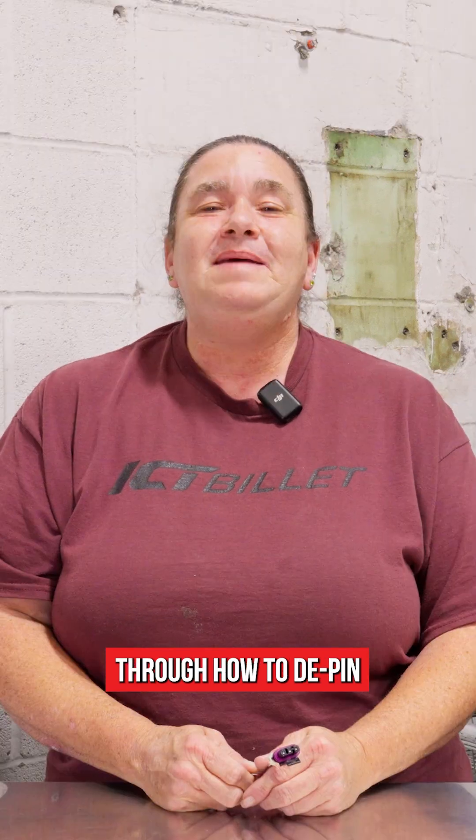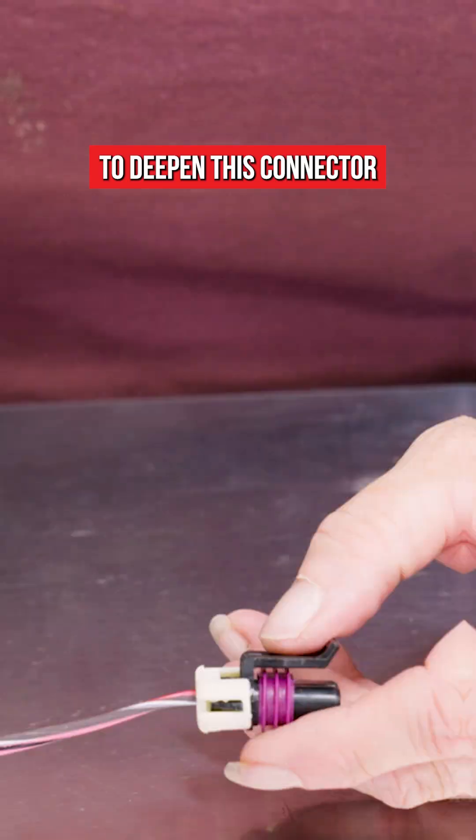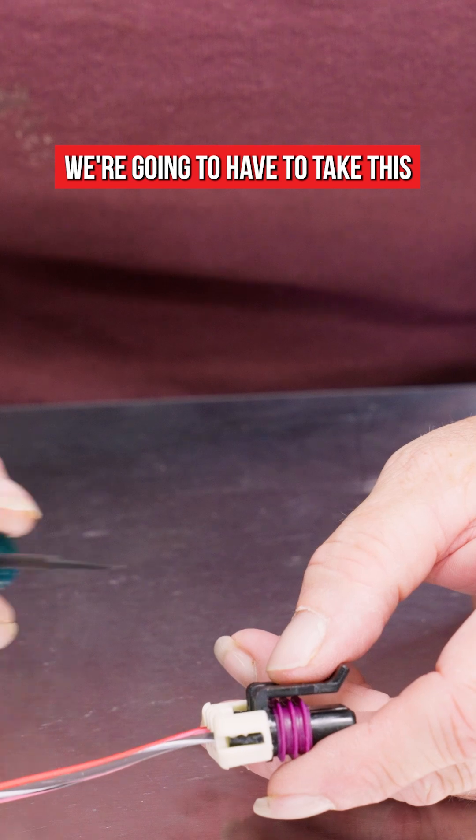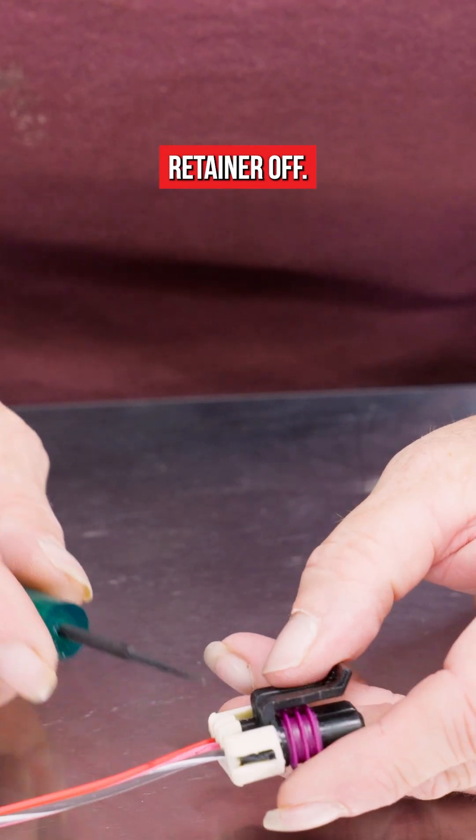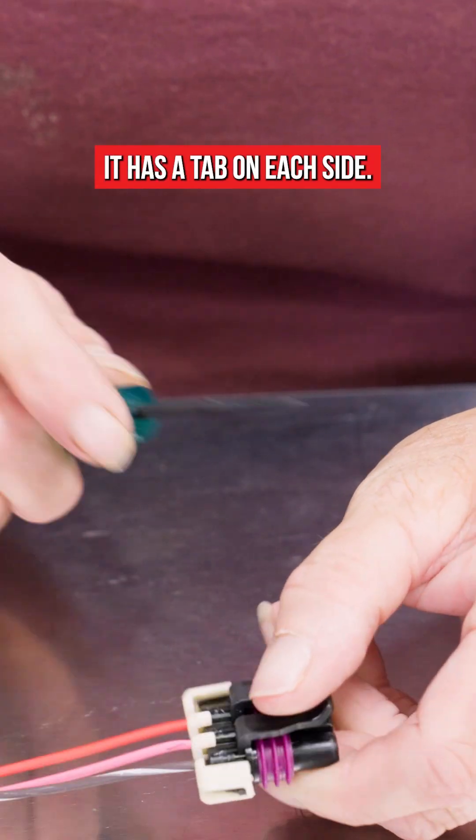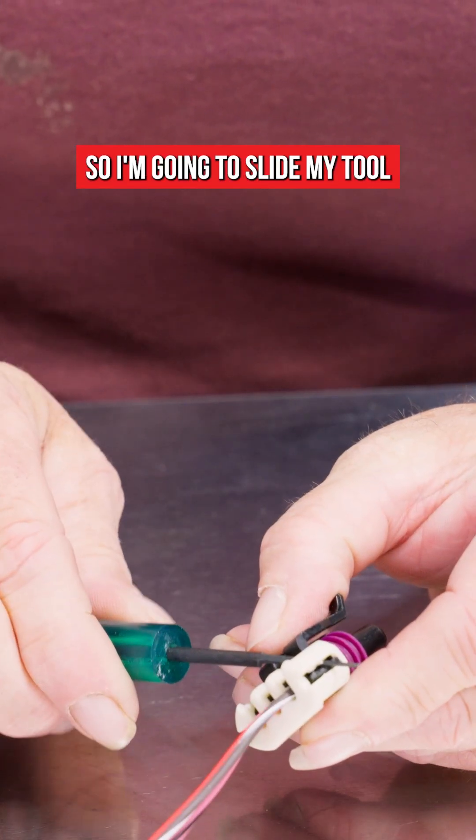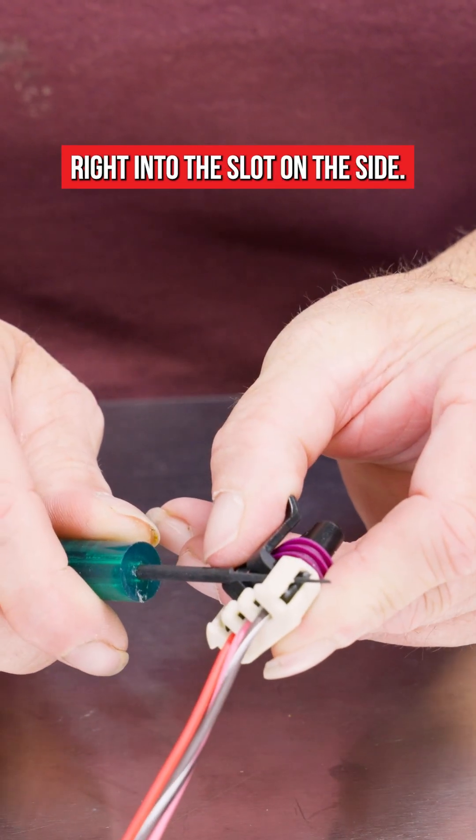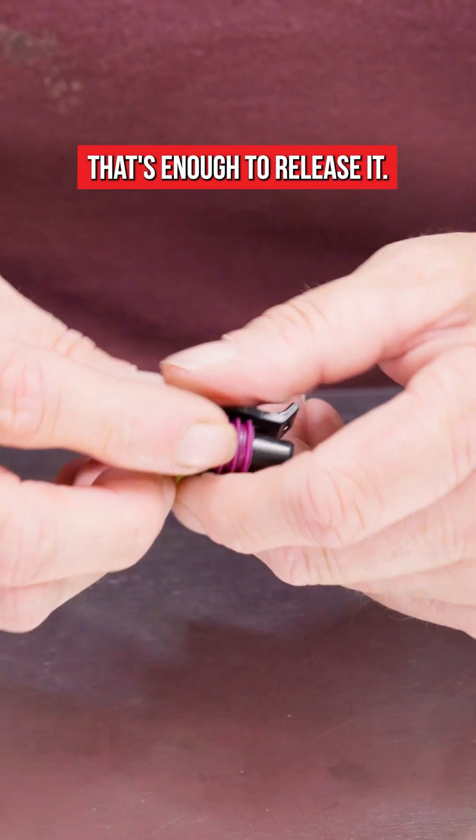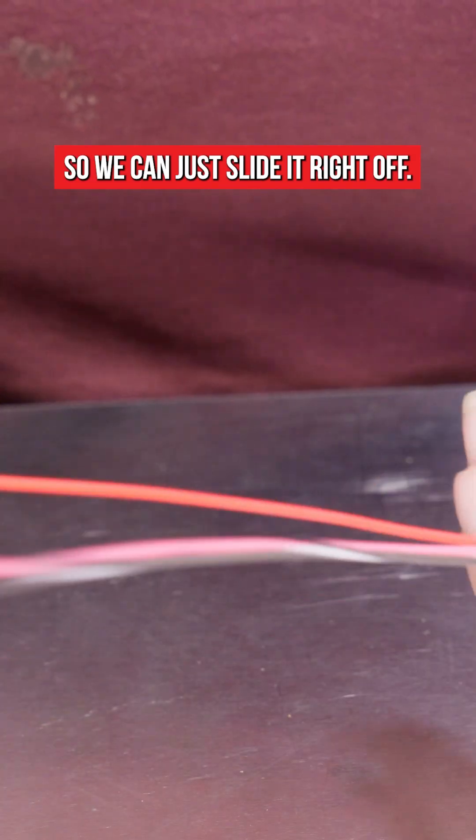I'm going to walk you through how to d-pin and replace this connector. To d-pin this connector we're going to have to take this retainer off. It has a tab on each side. We need to release it from that tab so I'm going to slide my tool right into this spot on the side. Lift up on it. That's enough to release it so we can just slide it right off.